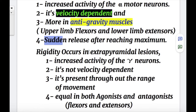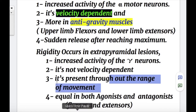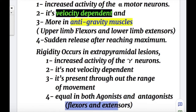Rigidity occurs in extrapyramidal lesions. Number one, it's due to increased activity of the gamma motor neurons. Number two, it's not velocity dependent. Number three, it's present throughout the range of movement. And number four, rigidity occurs equally in both agonist and antagonist muscles — both flexors and extensors are rigid at the same time.